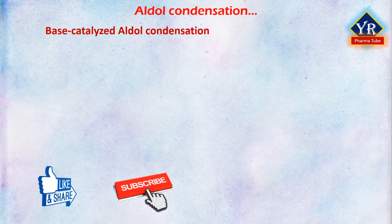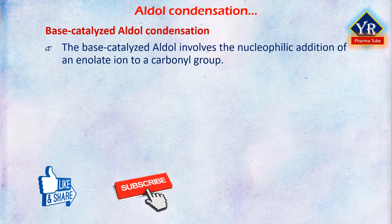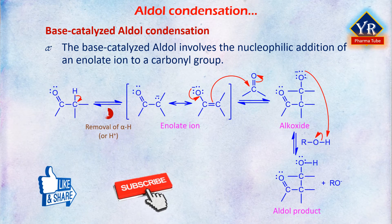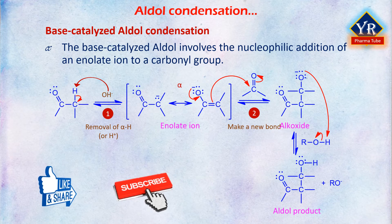Base-catalyzed aldol condensation: the base-catalyzed aldol involves the nucleophilic addition of an enolate ion to a carbonyl group. The first step is removal of an alpha hydrogen (a proton) by base, giving a resonance-stabilized enolate ion. The second step is formation of a new bond between a nucleophile and an electrophile. Lastly, reaction of the tetrahedral carbonyl addition intermediate with a proton donor gives the aldol product as a racemic mixture and generates a new base catalyst.